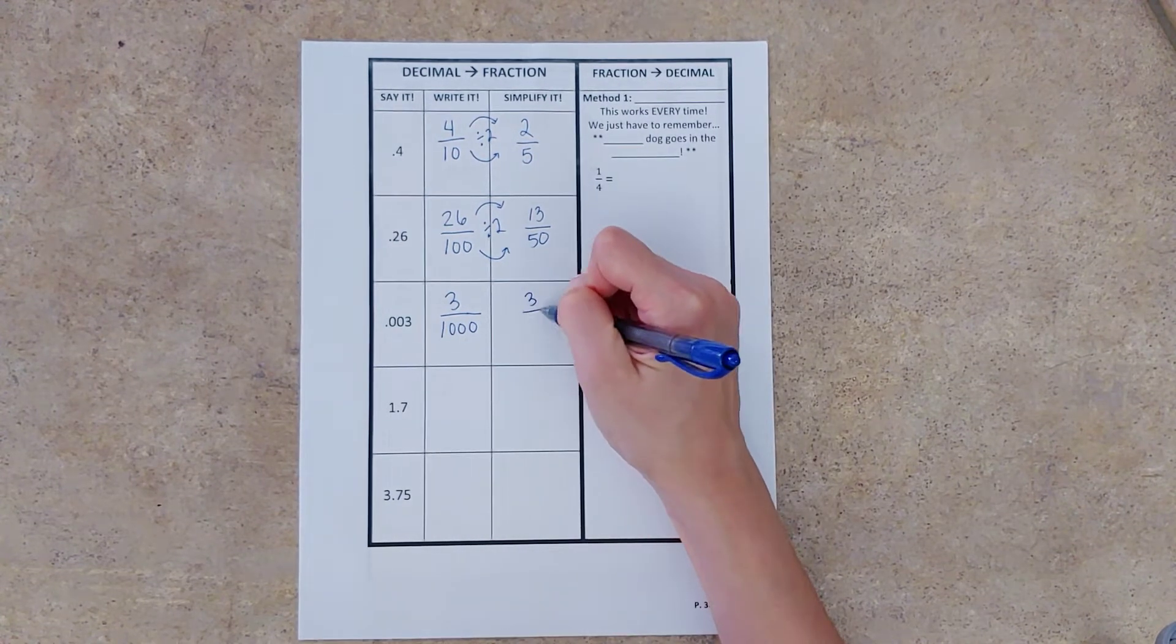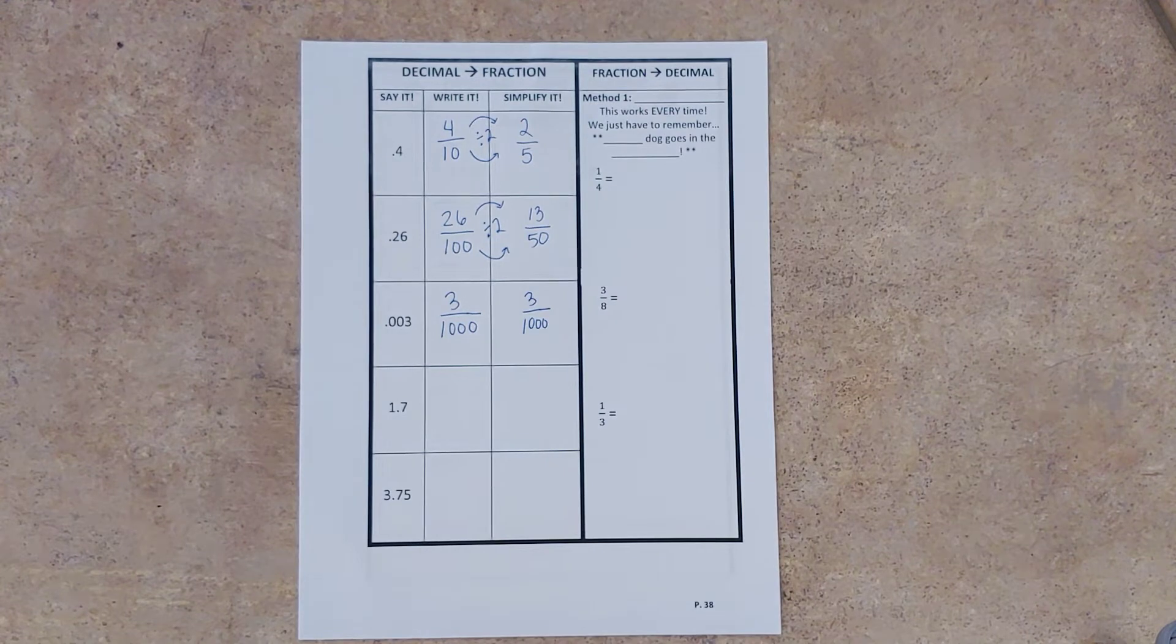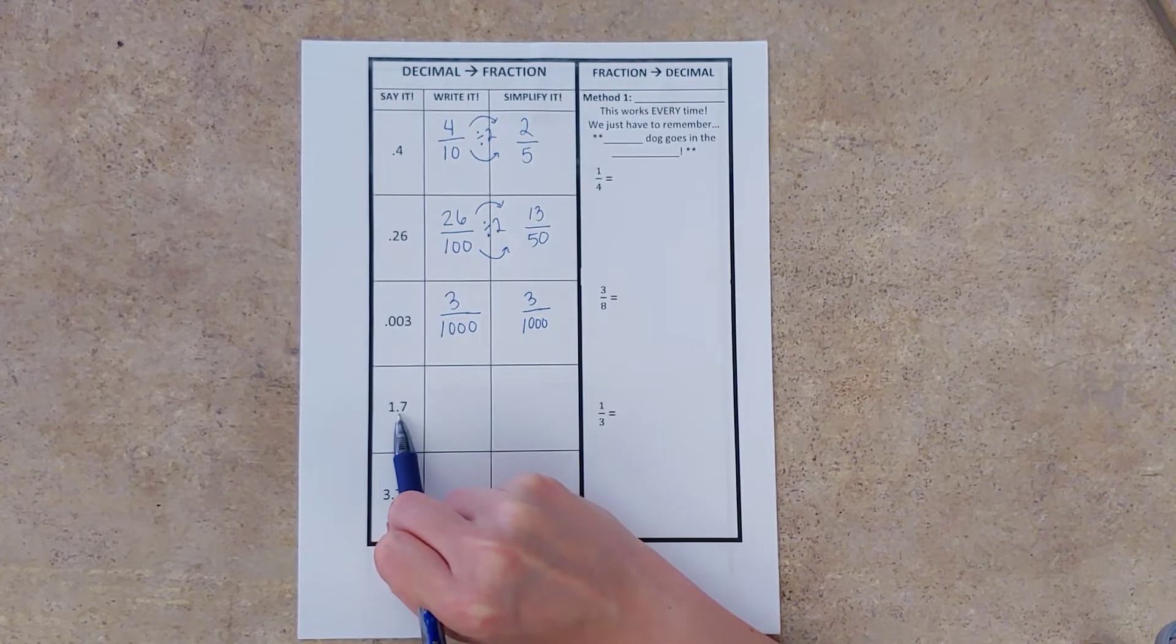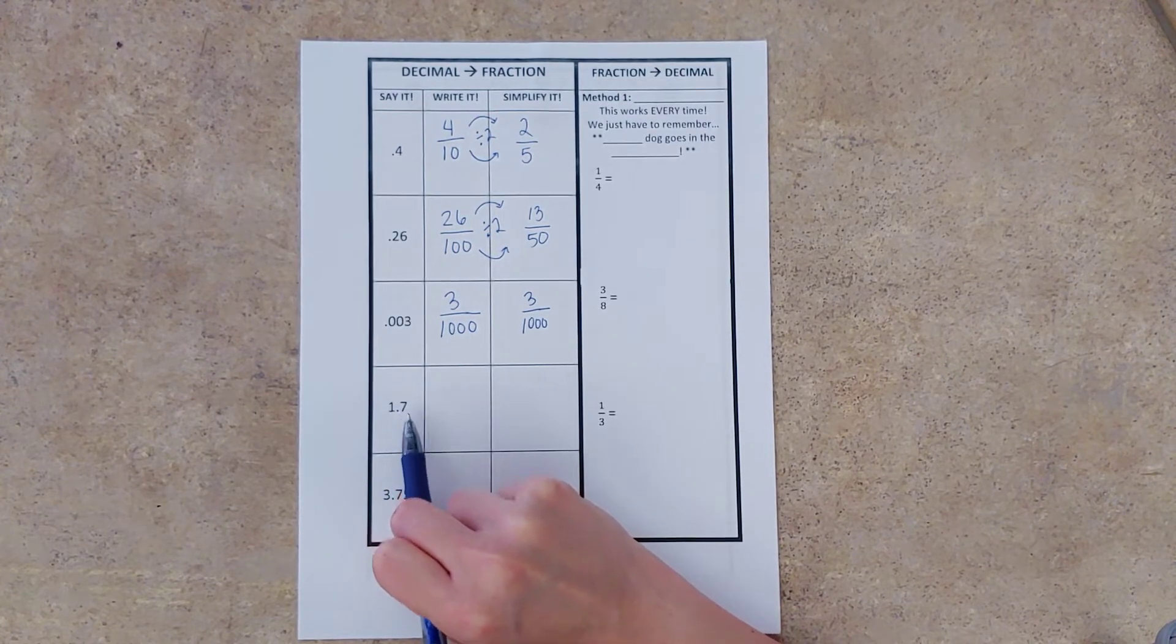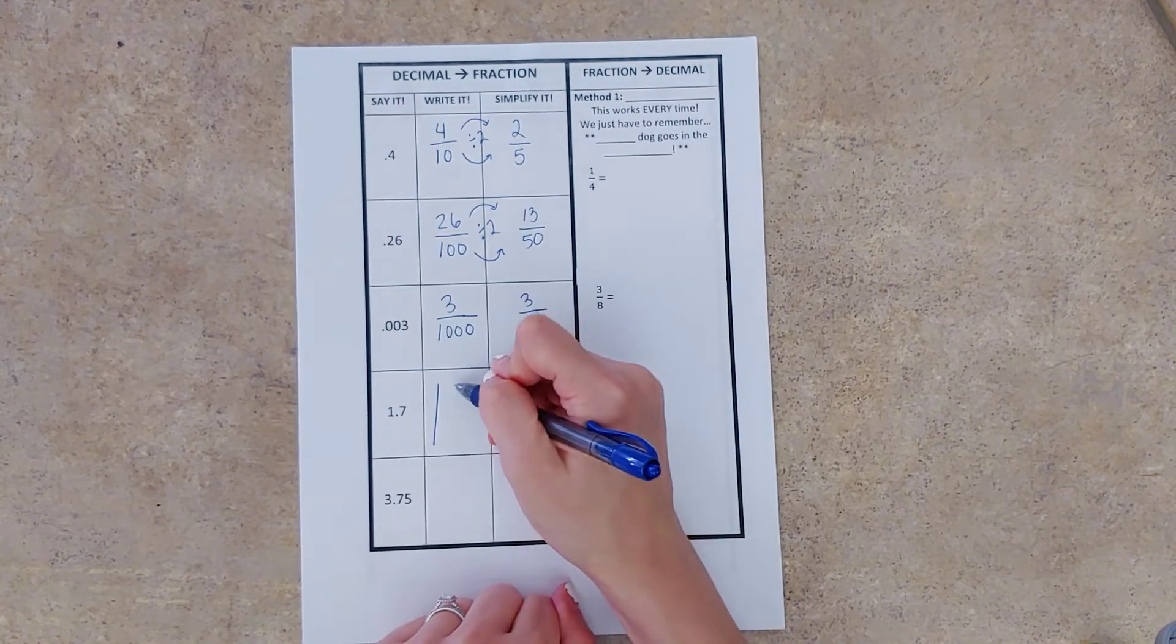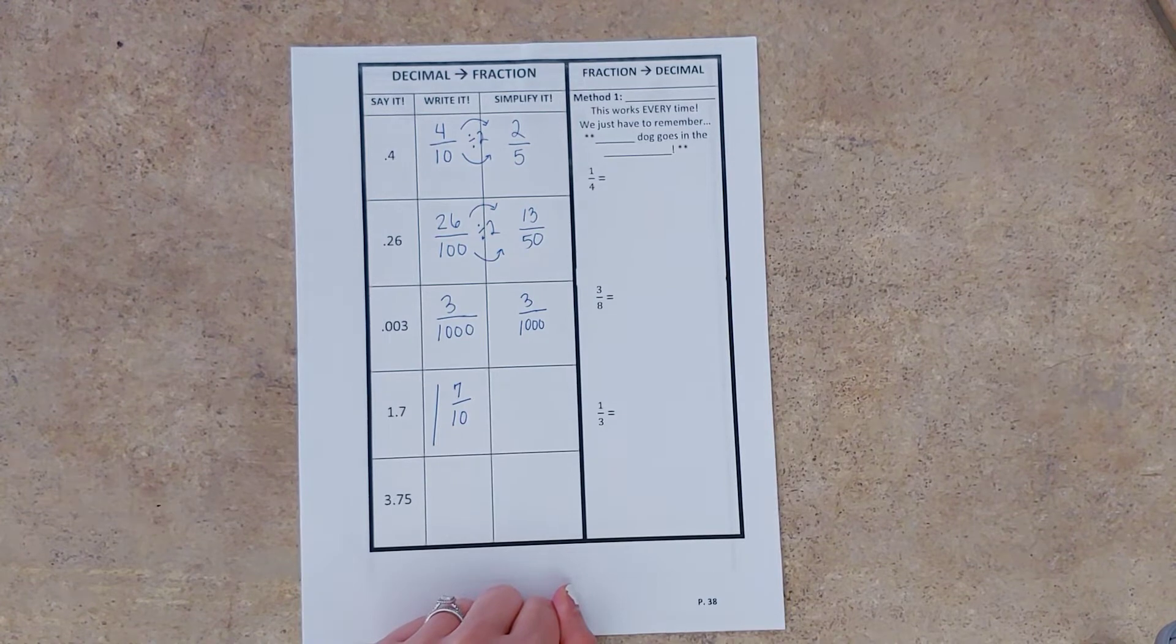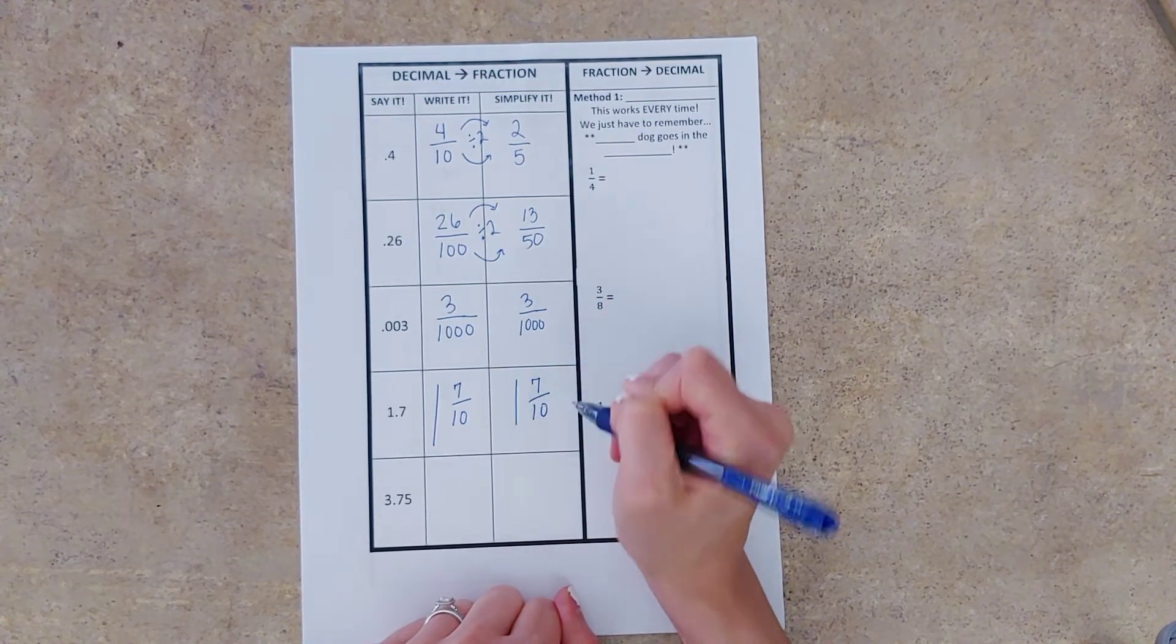All right, our next one. One and, I read the decimal point as an and, one and seven tenths. So one whole, and our fraction is seven out of ten. And again, on this one, we can't simplify it. That is as simple as it goes. Seven over ten.